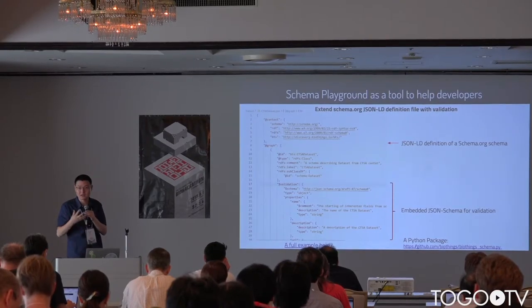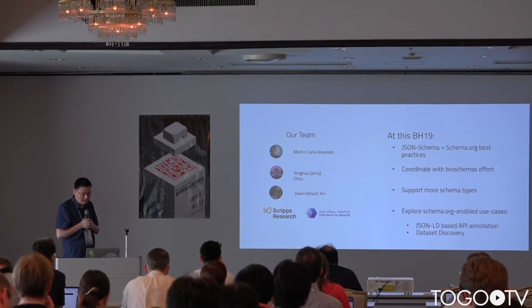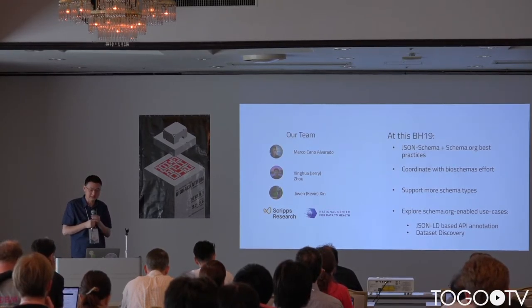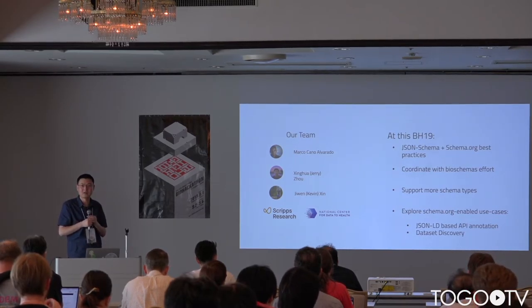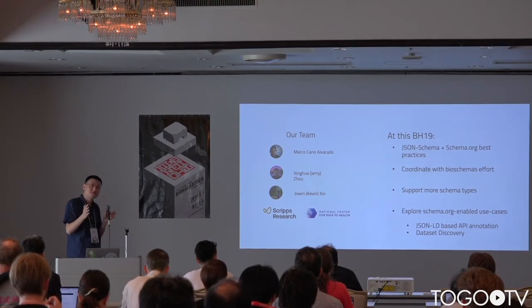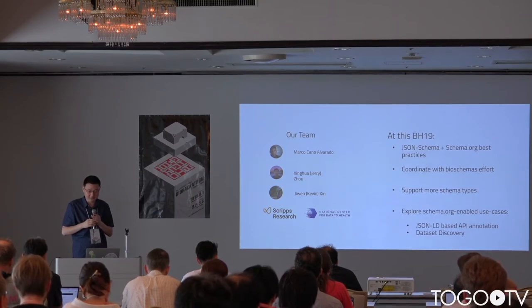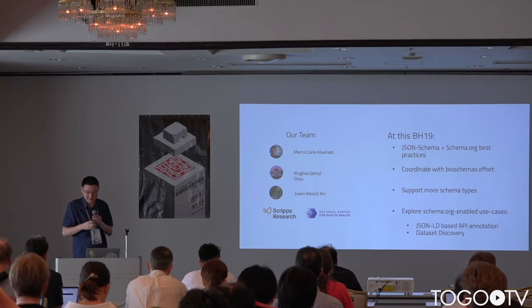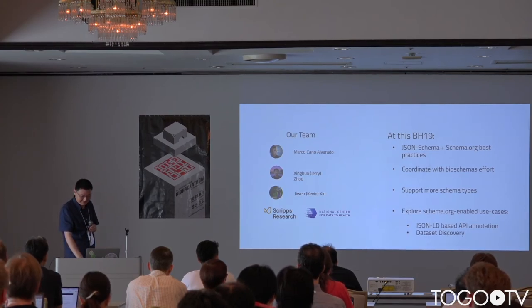We also have a Python package to help process this kind of schema, and our viewer can display this type of schema as well. Overall, for this BioHackathon, one goal is to work with the community here — there's a lot of semantic web expertise here — and discuss the best way to represent JSON Schema validation rules together with a schema.org-based semantic web data model. Another goal is to coordinate with the existing BioSchemas effort, discuss supporting more schema types, and talk about downstream applications like JSON-LD-based API annotations and dataset discovery use cases. That's it, thank you.